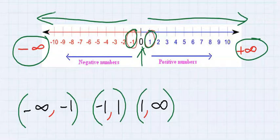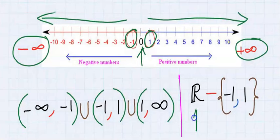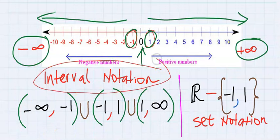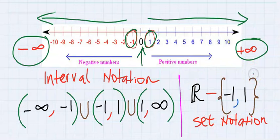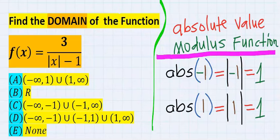Because it is absolute value, we extend to minus one — not allowed at the denominator — and one — not allowed at the denominator. We join this statement using union. This is our answer. Another way to represent our answer is all real numbers are allowed except minus one and one. This answer has been represented in interval notation, while this answer is represented in set notation — both are the same. Next, we choose our answer from the options: our answer is D.